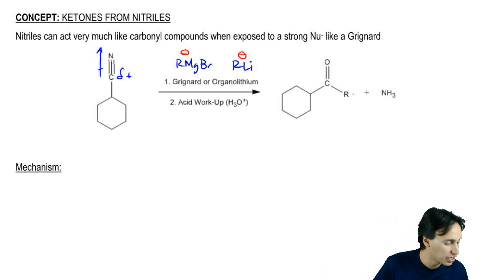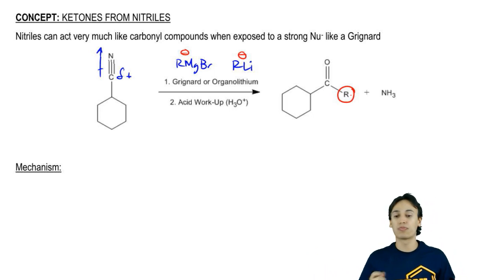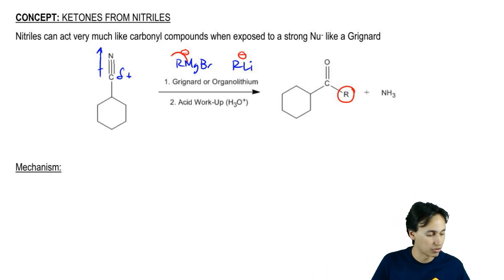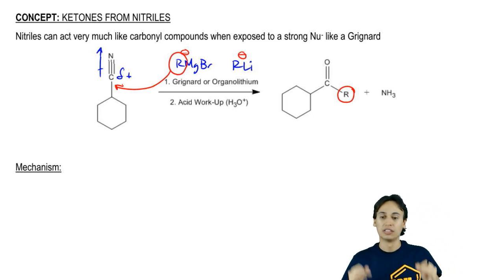The R group here is actually coming from the Grignard or the organolithium. That R gets added to the carbon and winds up turning into a carbonyl.